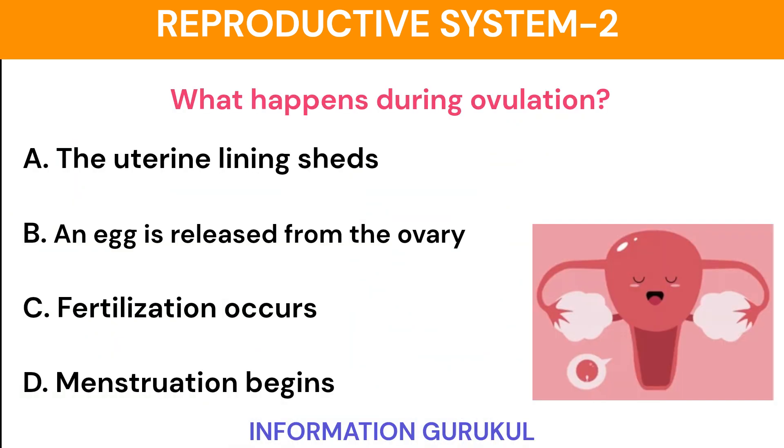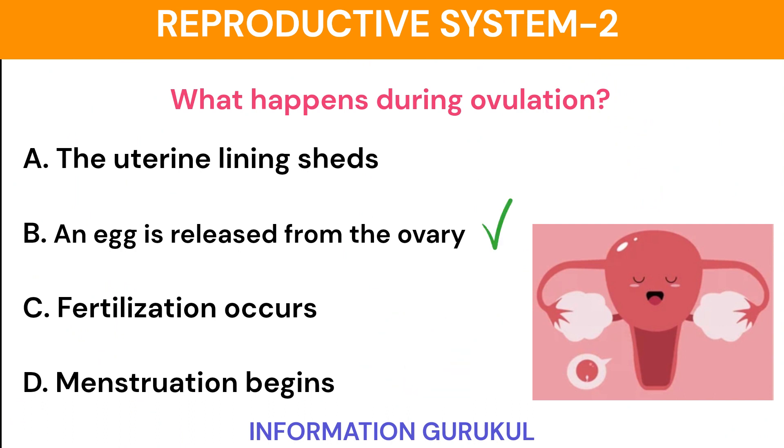What happens during ovulation? An egg is released from the ovary.